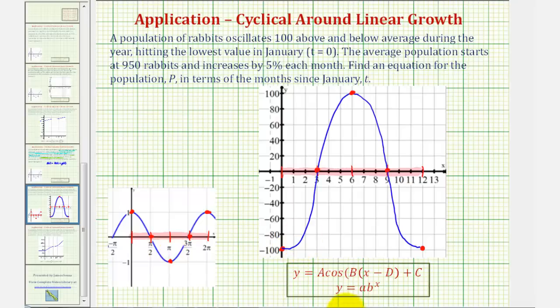And because this resembles the cosine function, we'll find the equation of the cosine function using this form of the equation. Remember, the absolute value of a is the amplitude. We can see our amplitude is 100, but because we have a reflection across the x-axis, a would actually be negative 100. So a equals negative 100.